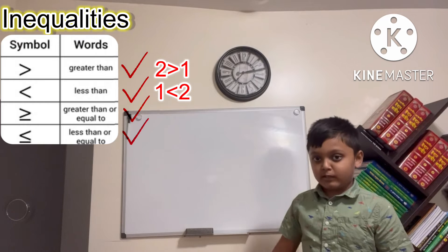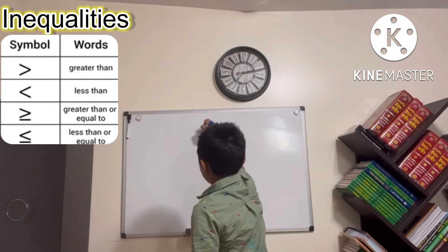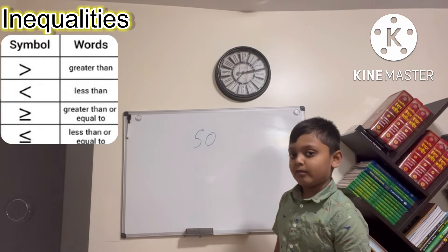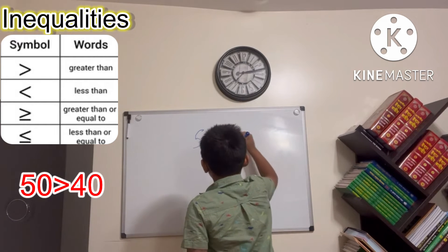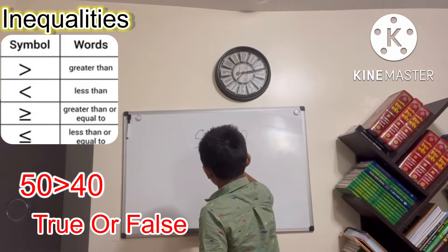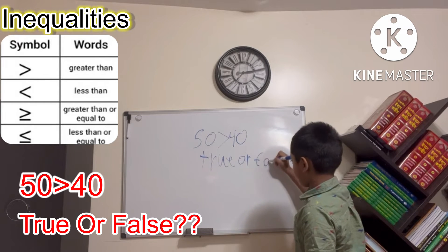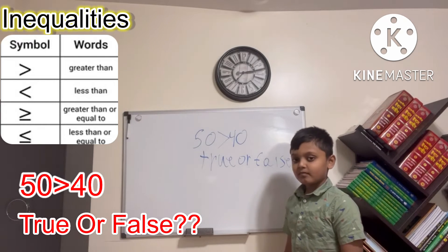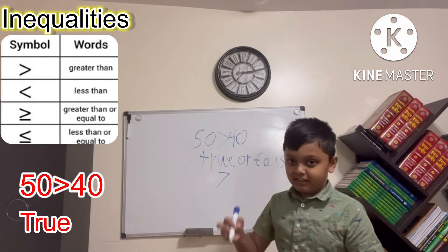You can also do problems with negative numbers, but first let's do one. Is 50 [blank] — I'm not going to say the symbol, and we'll see if you can figure out what the symbol is. Is this true or false? If you said it's true, you're correct, because this symbol means the greater than symbol.